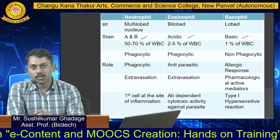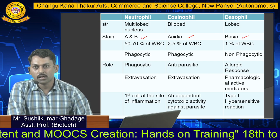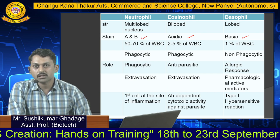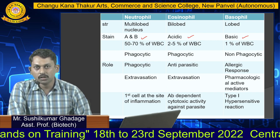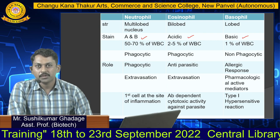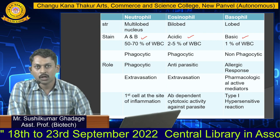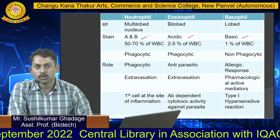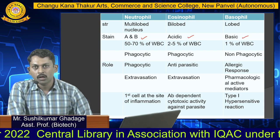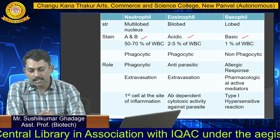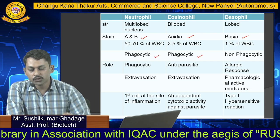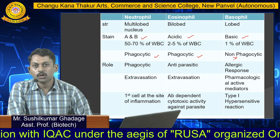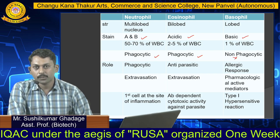The concentration of neutrophils in our body is 50 to 70% of WBC. Eosinophils make up 2 to 5% of WBC, while basophil concentration is about 1% of total WBC. Both neutrophils and eosinophils are phagocytic in nature, while basophils are non-phagocytic.